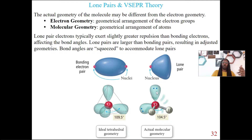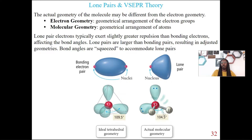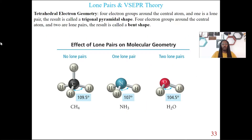Because we have those two lone pairs, that's going to impact our actual molecular geometry. These lone pairs, because they're bigger, are actually going to be squeezing in these hydrogen bond angles. In this case, it's actually 104.5° between the hydrogens. Because lone pairs are impacting our bond angles, that's going to impact everything else.